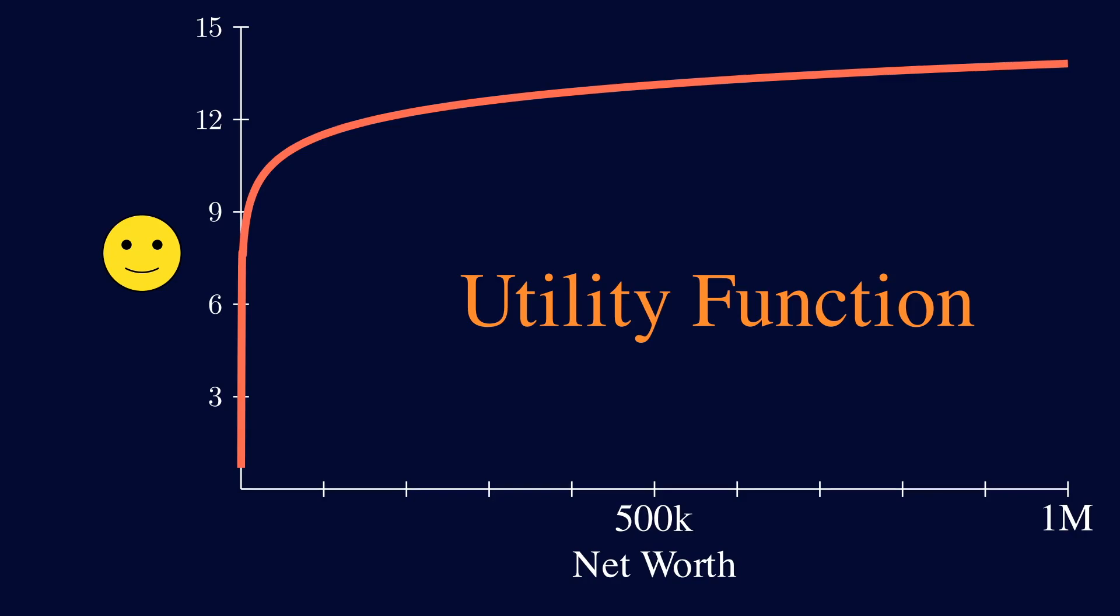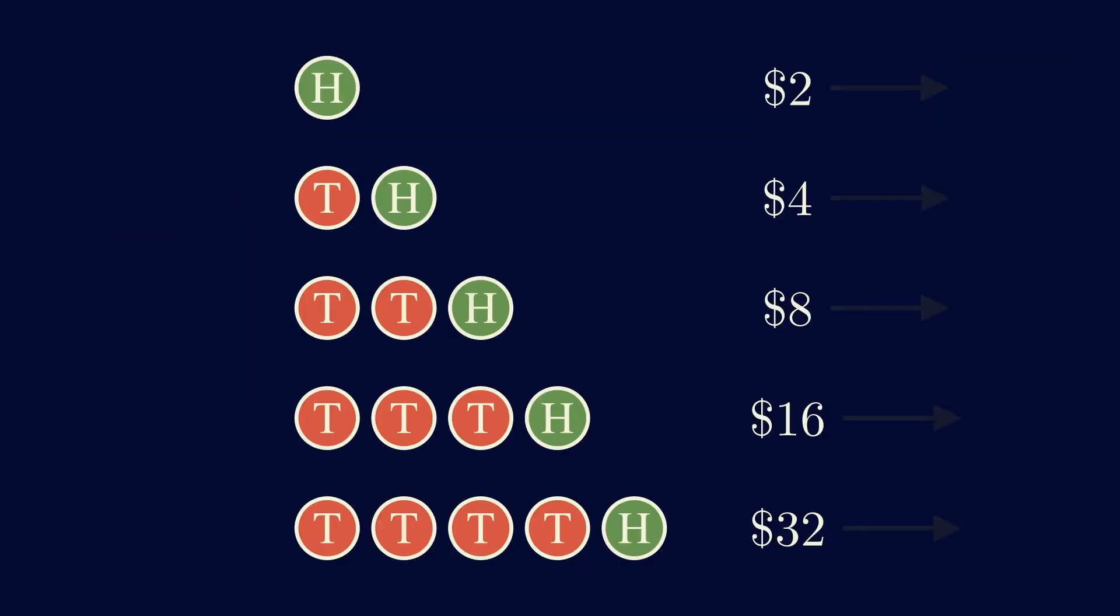But the main property of this function is that if you have $100,000, adding another $100,000 will make you much happier than if you had $500,000 and added $100,000. So your happiness doesn't increase as fast. The idea was to convert these dollars into happiness points.